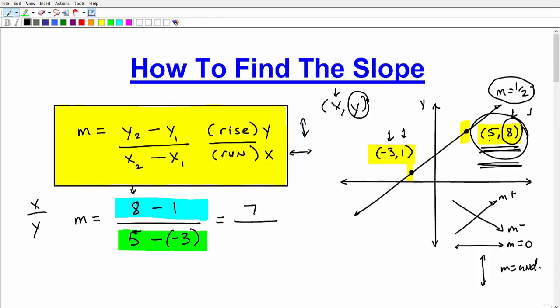8 minus 1 would be a positive 7. And then 5 minus a minus 3 should be, well, is, hopefully should be for you, 5 plus 3. A minus a minus 3 is a plus 3, which is going to be 8. So this is going to be 7 over 8. So that's our slope. M would be equal to 7 eighths. That's how we would actually write the answer.